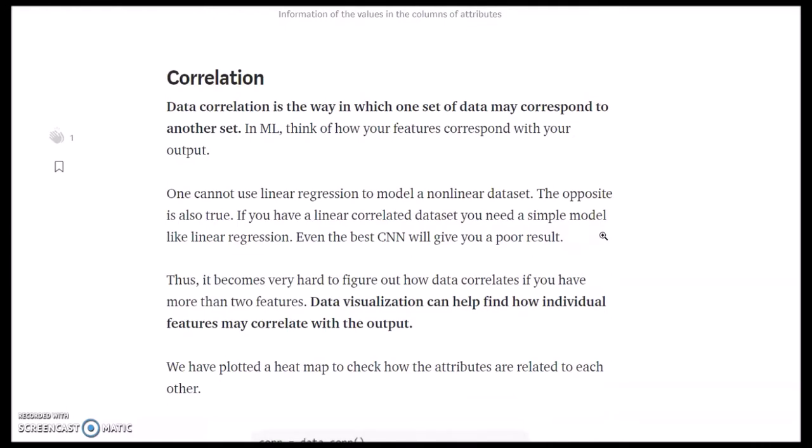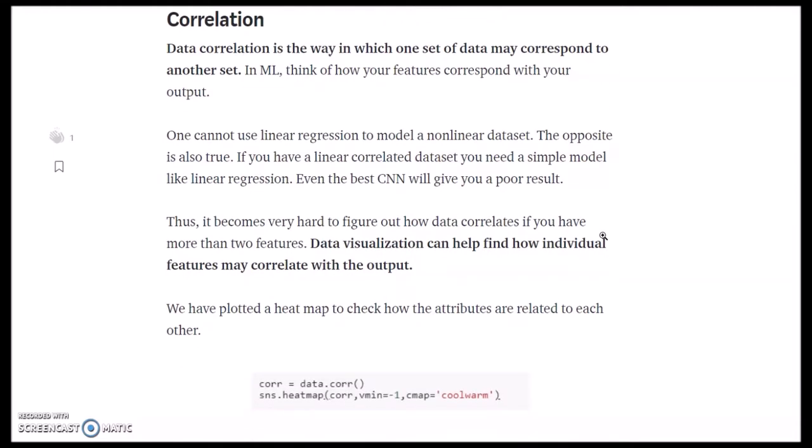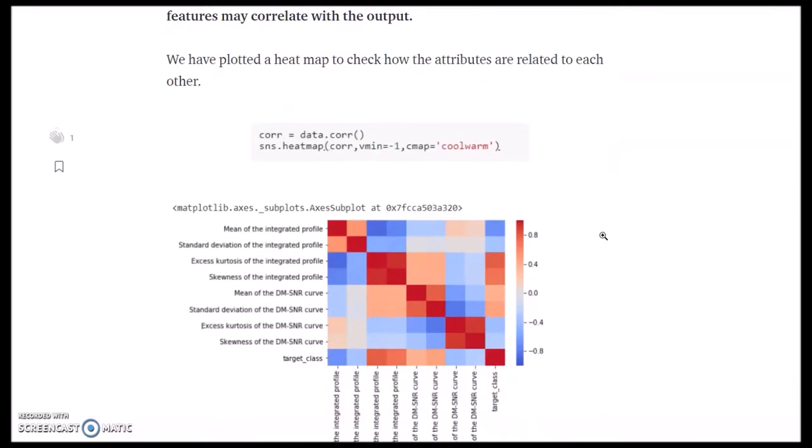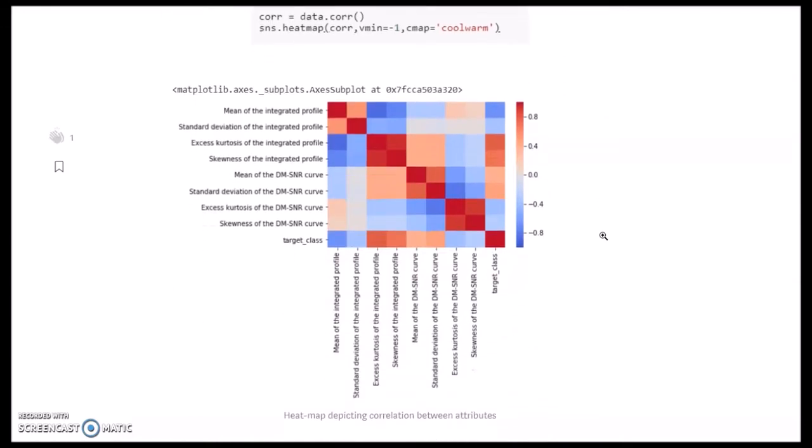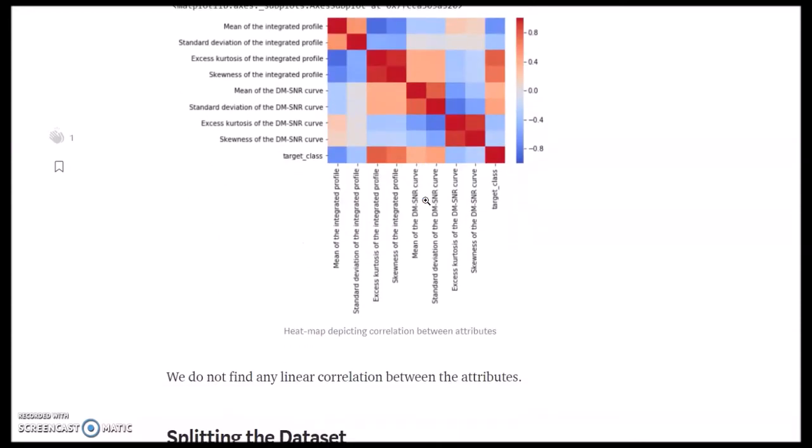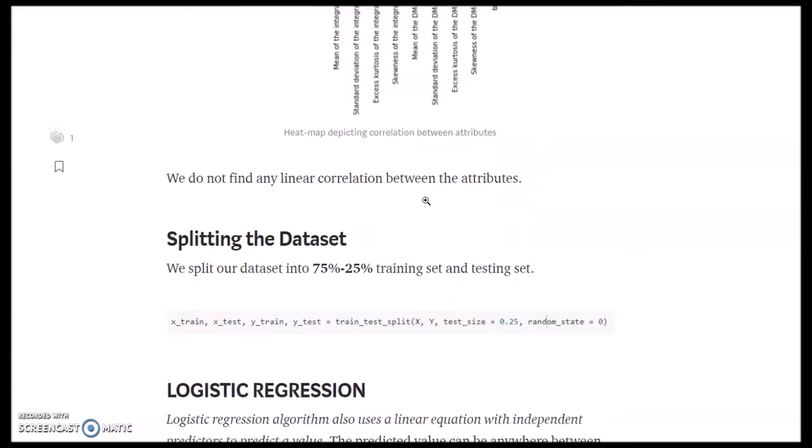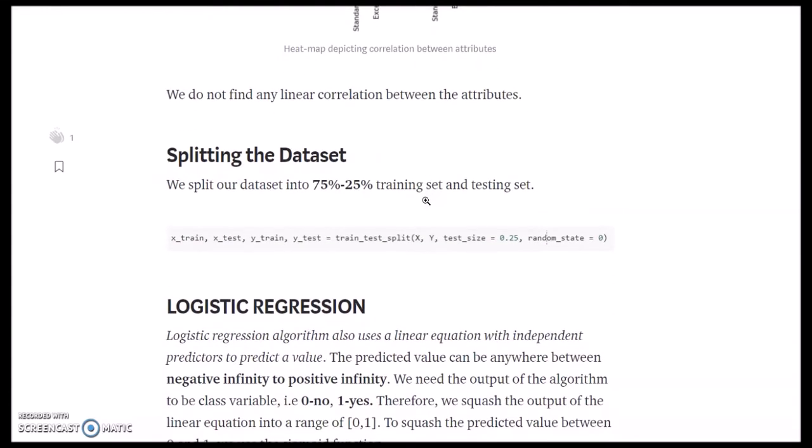Correlation is a way to find how an attribute is related to another feature. We can visualize the same using a heatmap. This is the heatmap depicting correlation between attributes. We do not find any linear correlation between the attributes. Splitting the dataset. We split our dataset into 75% for the training set and 25% for the testing set.